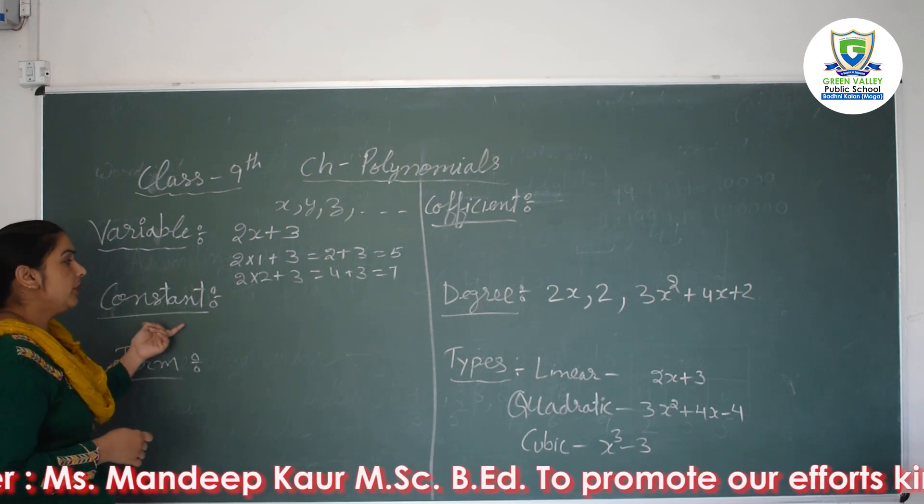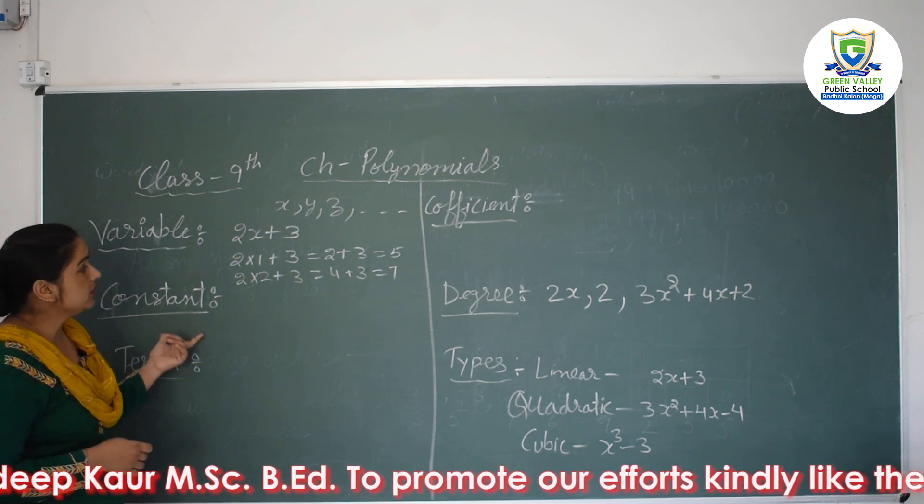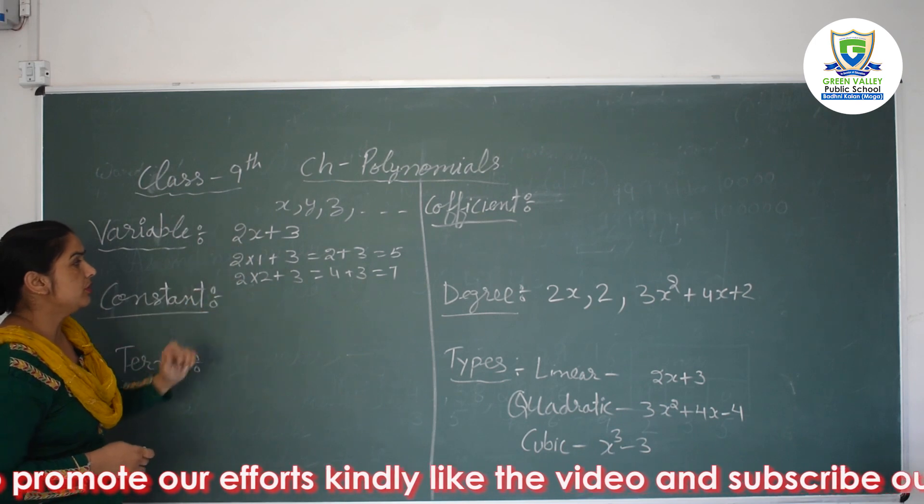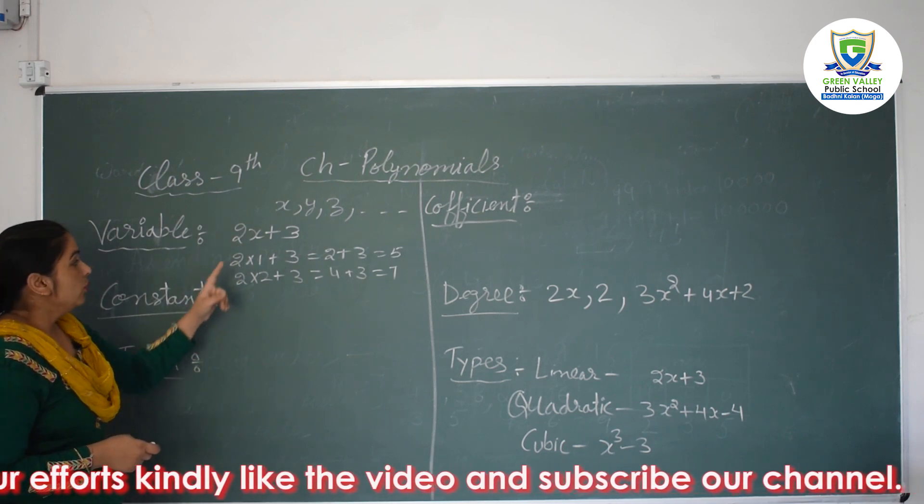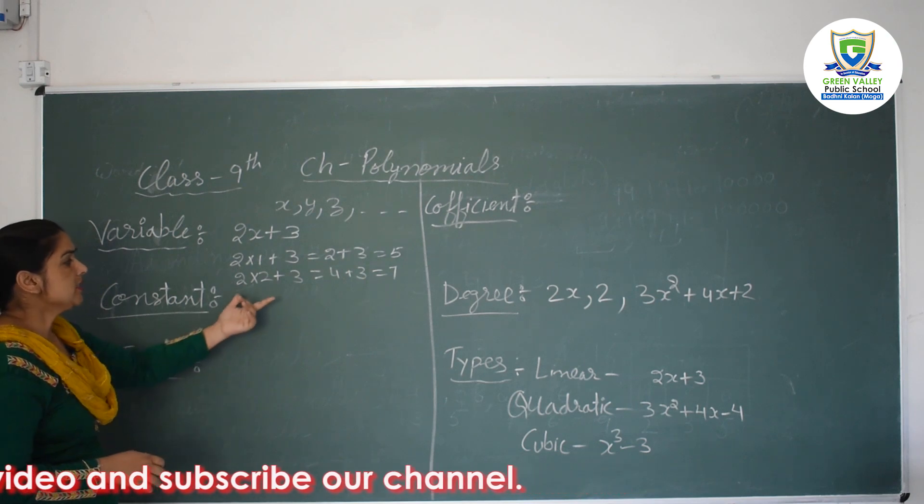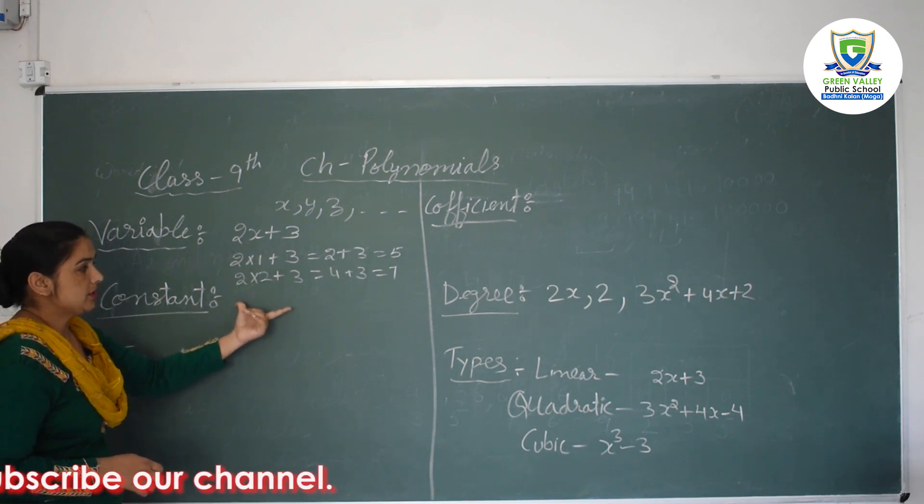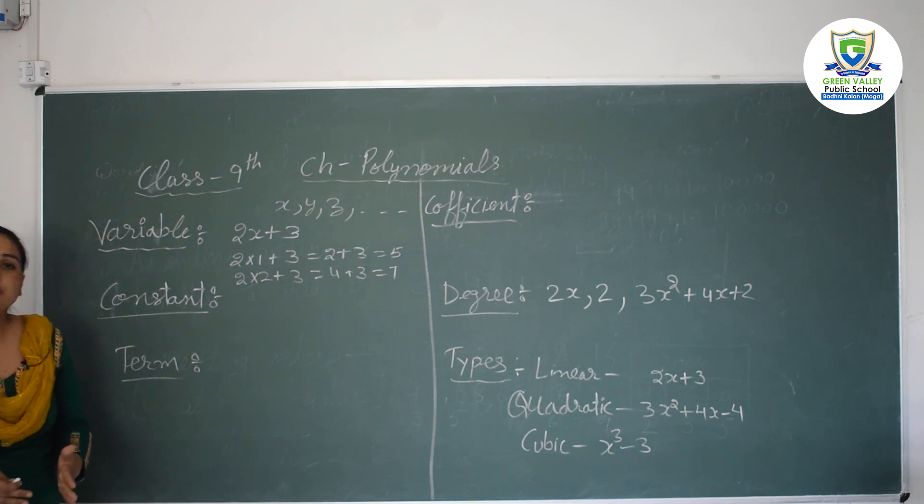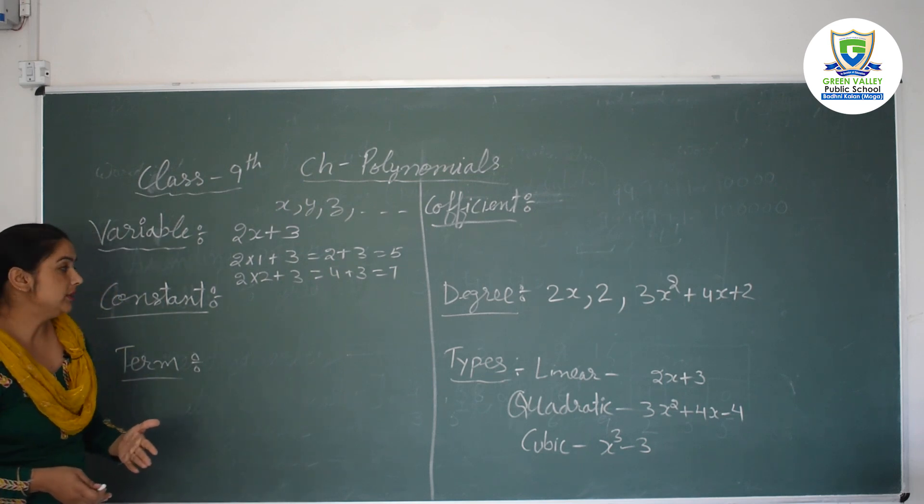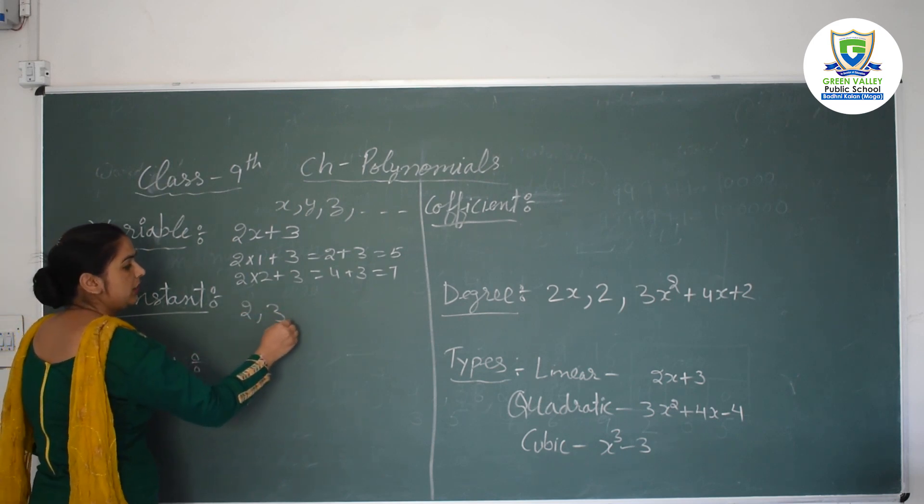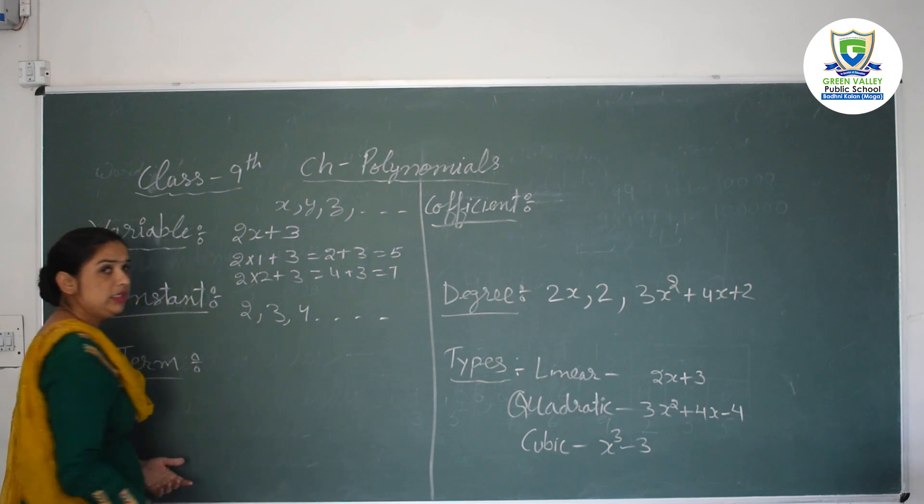After this students, we have the constant. What is constant? Constant, like here we have substituted the values of x, but 2 and 3 are remaining same. Means they are as it is. So in simple words we can say whose values are not getting changed, that is called constant. And these are generally numbers: 2, 3, 4, so on. Any number.